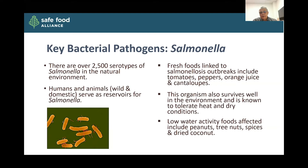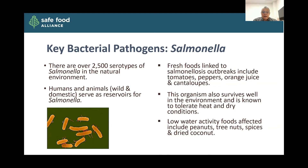Much of that understanding came from major outbreaks and recalls related to low-moisture foods like peanuts, tree nuts, spices, and dried coconut, in which research found that some of these organisms could survive — for example — in an almond orchard for 5 to 10 years in the soil. It is still true that the main reservoir for these organisms is humans and animals, but once out in the environment they can hang on and survive long enough to recontaminate food and ultimately cause illness.